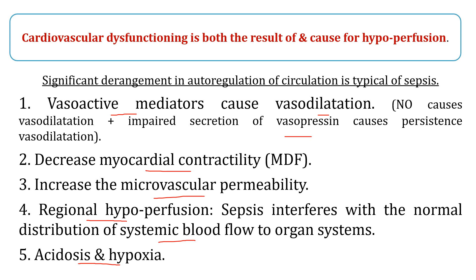All these factors predispose to regional hypoperfusion, as in the case of sepsis, which interferes with the distribution of systemic blood flow — shifting or maldistribution of circulation from non-vital organs to vital organs. The condition can be worsened further in states of acidosis and hypoxemia.